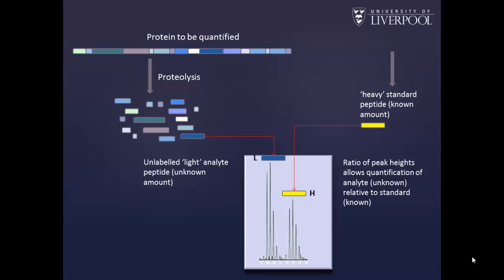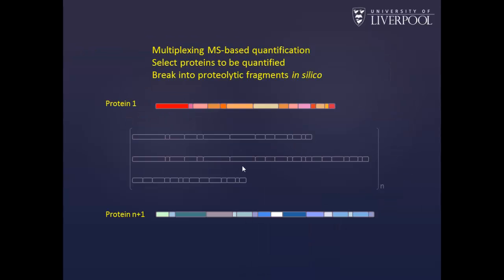The technology and the approach is very well established and well understood. You take the protein to be quantified and digest it. You synthesize or somehow prepare a heavy standard peptide in known quantities. You do the mass spectrometry, and because of the stable isotope labeling, you can then discriminate the heavy and the light forms, and the ratio of the two will quantify the unknown light form.